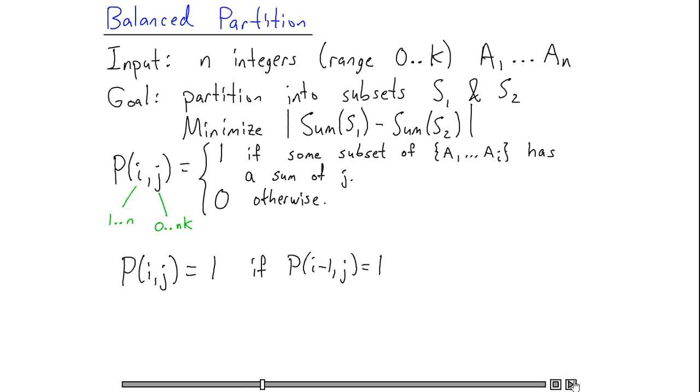And p of ij will also be 1 if p of i minus 1 j minus ai is equal to 1. Because in this case, there's a subset of the first i minus 1 elements which sums to j minus ai. So if I then add in the i-th element, I'll have a subset of the first i elements which sums to j.